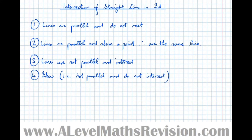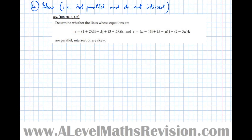Now we'll look at an exam question where we try to identify which of these four cases two straight lines fall into — whether they are parallel, intersect, or skew. The first thing to do before attempting any method is write the equations in vector format. We don't want to see any i's, j's, and k's — they just make it look more complicated.